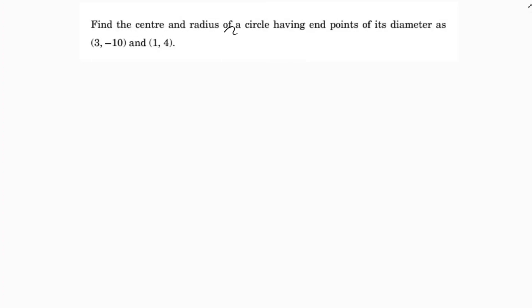Find the center and radius of a circle having endpoints of its diameter as (3, -10) and (1, 4). So here the circle diameter is given, whose endpoints are given A and B. I will consider them as A and B. A is (3, -10) and B is (1, 4).